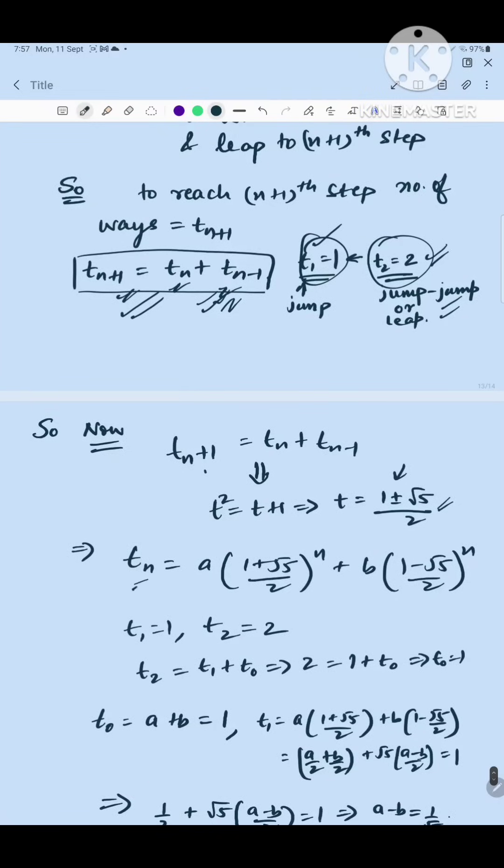So as I have taught you that t_n can be written as a times (1 + √5)/2 to the power n plus b times (1 - √5)/2 to the power n. And t_1 and t_2 are 1 and 2, we have manually calculated this.